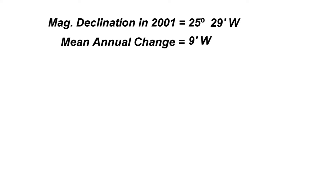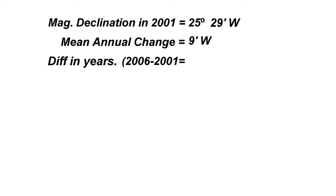The question says: calculate the magnetic declination of the map in the year 2006. The first thing you do is calculate the difference in years between the year the map was created and the year that is being asked. In this case we have 2001 and 2006. Subtract 2001 from 2006 and you get a difference of five years.